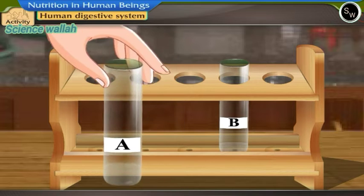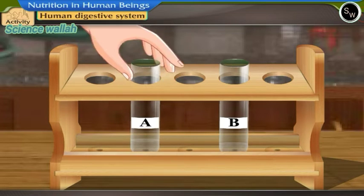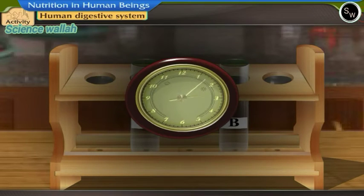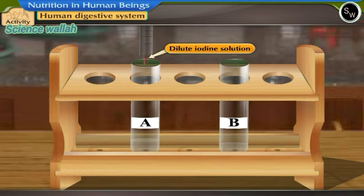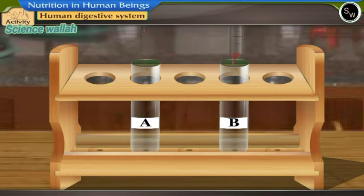Shake well. Keep both the test tubes undisturbed for 20-30 minutes in a test tube stand. Add two drops of dilute iodine solution to both the test tubes.